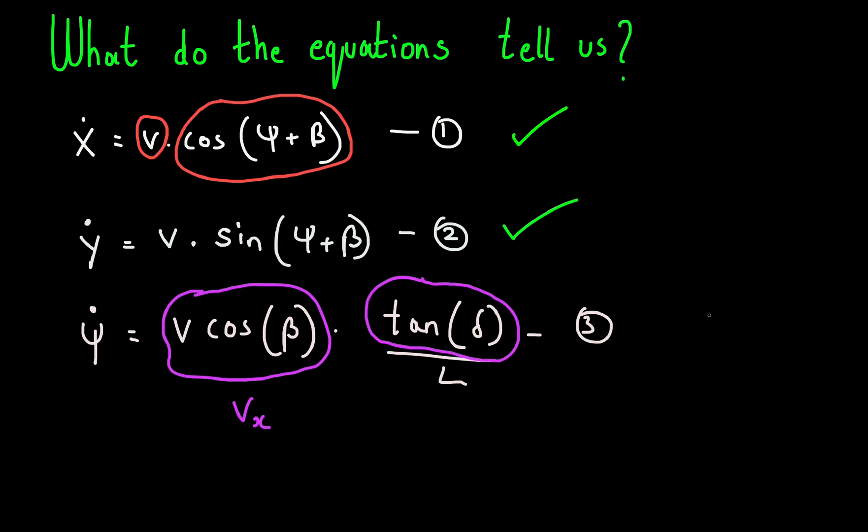Let's look at the tan delta term. What happens if we plug in delta equals zero? Psi dot then becomes zero. This is exactly what we expect, right? If we don't apply a steering angle, your car shouldn't change its heading. If it does, you should probably get it looked at. Note that steer angles usually lie between zero and 30 degrees. And because tan is an increasing function in that interval, this equation also tells us that our car would have a higher yaw rate if we turn the steering wheel more.